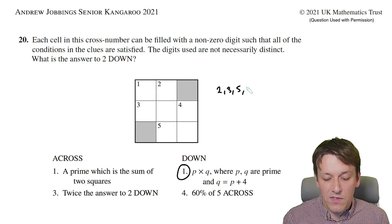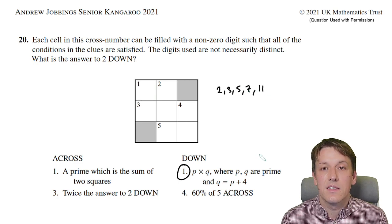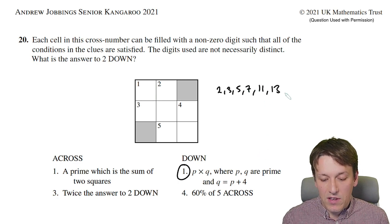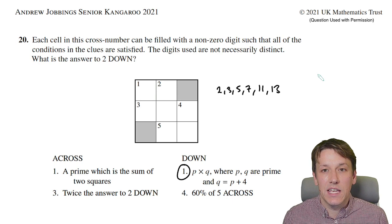The options we've got are 2, 3, 5, 7, 11, 13—beyond this the numbers are clearly going to get too big.